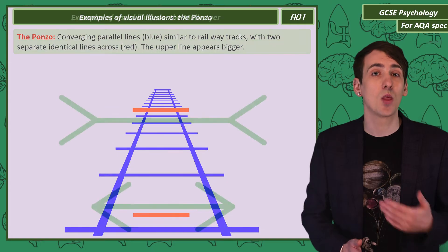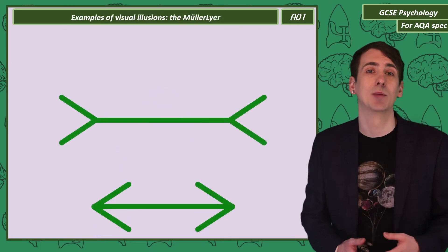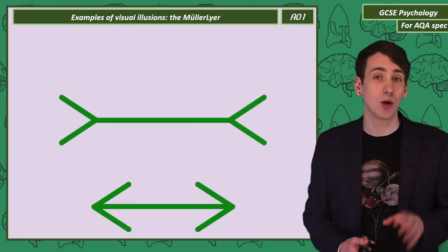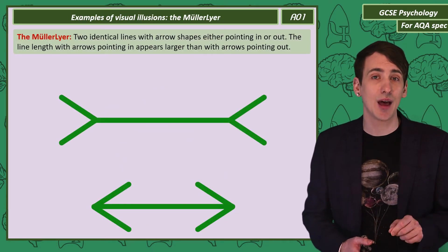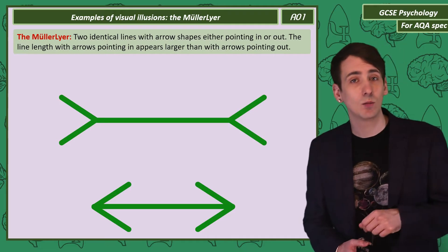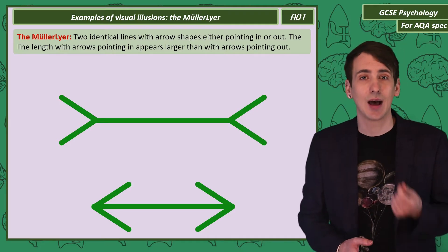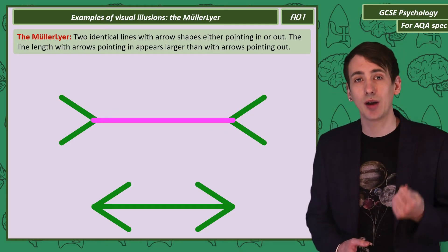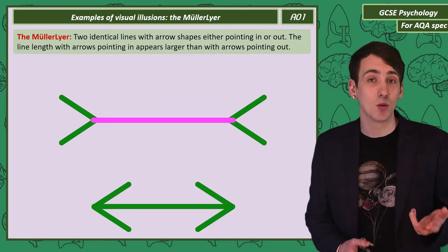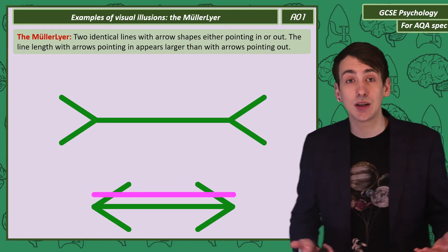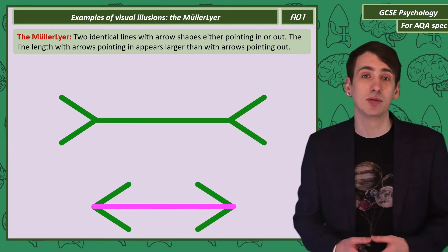Next, the Müller-Lyer. Here are two identical lines. At each end there are arrows pointing either in or out. Again, the top line should appear bigger, but when I move it down you can see it's just the same length.